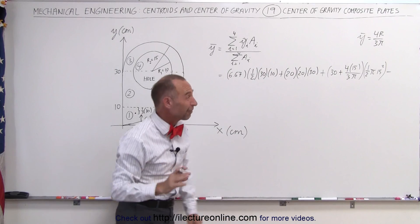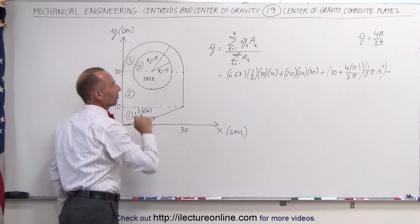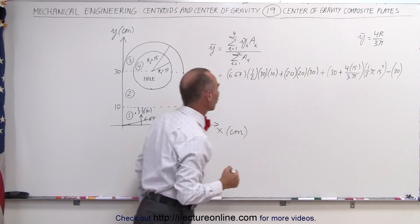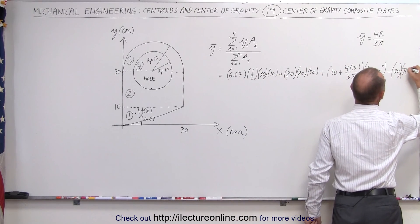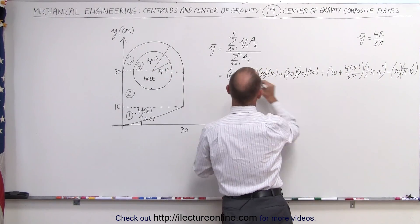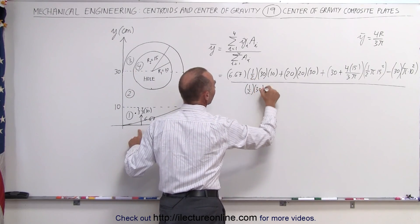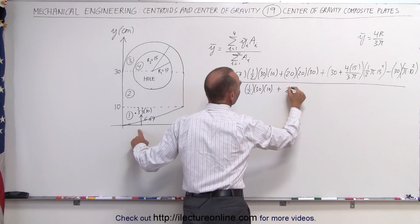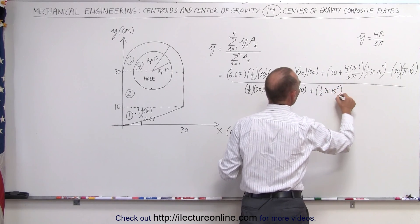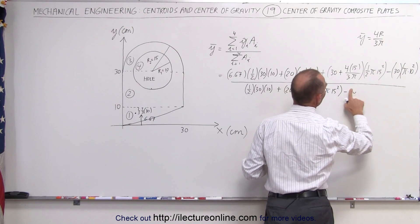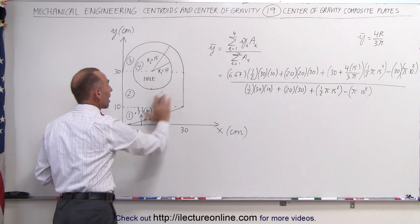Finally, we subtract the hole. The center of mass of the hole is right in the middle — a distance of 30 cm above the x-axis. So we subtract: the y-coordinate of the center of mass of the hole is 30 centimeters, and the area of the hole is π times 10 squared (full circle, radius 10 cm). Then we divide the whole numerator by the sum of all the areas: one-half times 30 times 10, plus 20 times 30, plus one-half π times 15 squared, minus π times 10 squared.